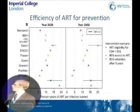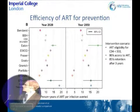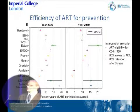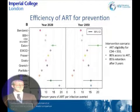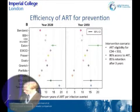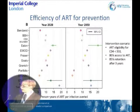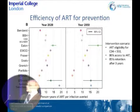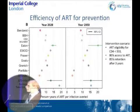The next outcome was the efficiency of ART for prevention in terms of person-years of ART per infection averted. There was a very wide range of estimates across models: in 2020, the range was from one infection averted for every six years of ART provided up to one infection averted for every 19 years of treatment. For 2050, the range was even wider, from four to 20 person-years per infection averted.